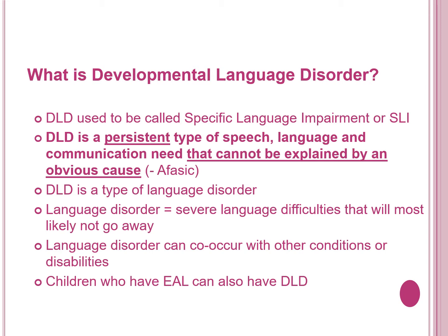Many children have a language disorder along with another condition or disability, like Down Syndrome or Autism. As you would expect from the term Developmental Language Disorder, DLD is a type of language disorder. Children who have English as an additional language can also have DLD, and they will have difficulties in using both or all of their languages. It can be more difficult to unpick the specific language difficulties facing children with EAL, so a good place to start is by talking with the child's parents to find out if they also have difficulties in talking and understanding in their home language.